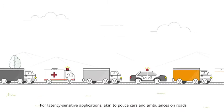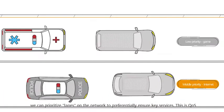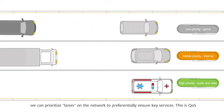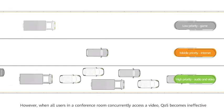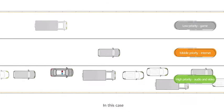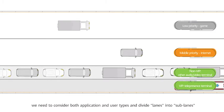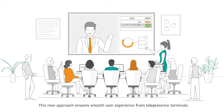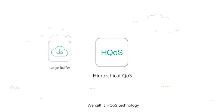For latency-sensitive applications, akin to police cars and ambulances on roads, we can prioritize lanes on the network to preferentially ensure key services. This is QoS. However, when all users in a conference room concurrently access a video, QoS becomes ineffective. In this case, we need to consider both application and user types, and divide lanes into sub-lanes. This new approach ensures smooth user experience from telepresence terminals. We call it HQoS technology.